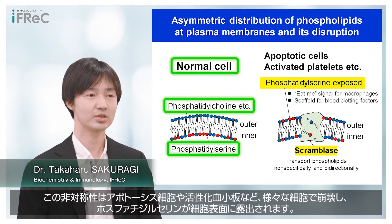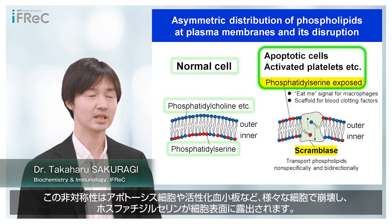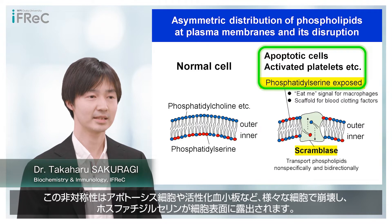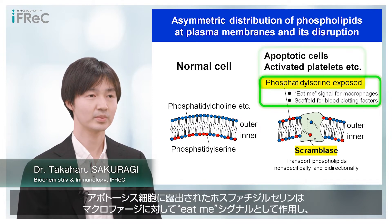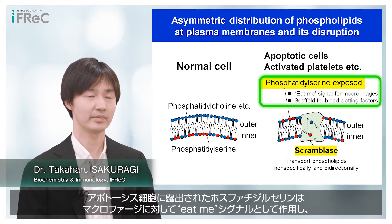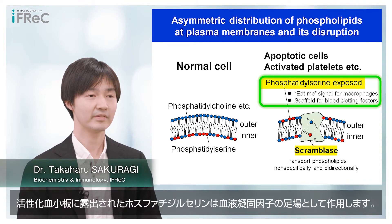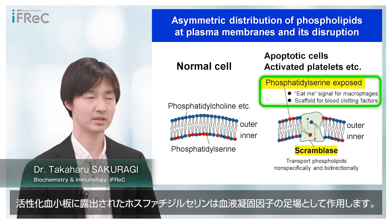This asymmetrical distribution is disrupted in various cells, such as apoptotic cells or activated platelets, and phosphatidylserine is exposed to the cell surface. Phosphatidylserine exposed on apoptotic cells works as an eat-me signal for macrophages, while activated platelets expose phosphatidylserine as a scaffold for blood clotting factors.